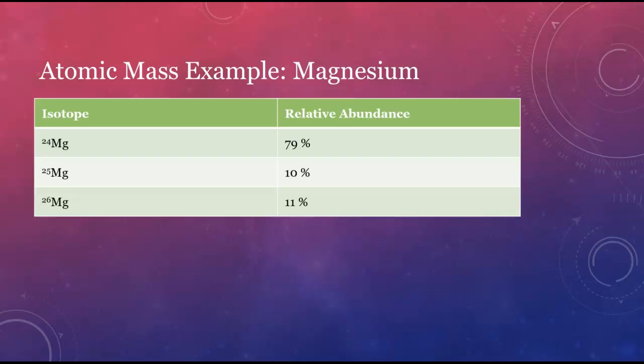Take magnesium, for example. There are three naturally occurring isotopes of magnesium with mass numbers of 24, 25, and 26. Since the atomic number of magnesium is 12, the isotopes have 12, 13, and 14 neutrons, respectively.